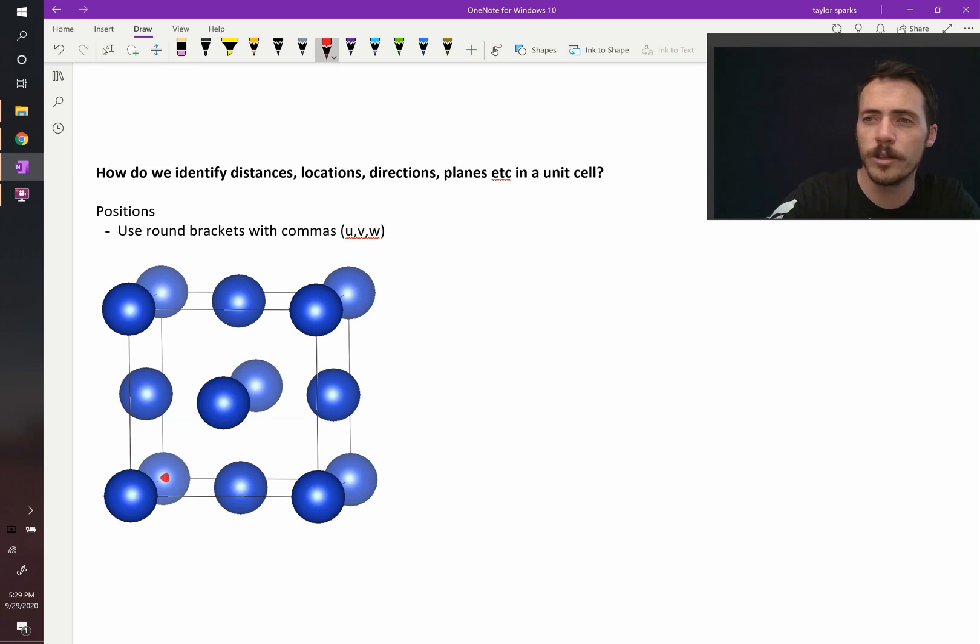So we select an origin right there. Now we give it our axes in the x, the y, and the z directions. x, y, z. Sometimes you'll see those labeled a, b, and c. That's fine. Then all we have to do is figure out where the atom lies in this new Cartesian coordinate system that we have. For example, if we're talking about this atom right there,